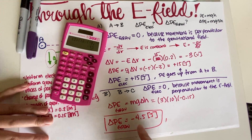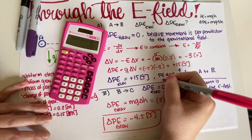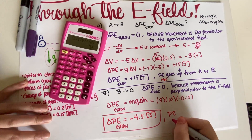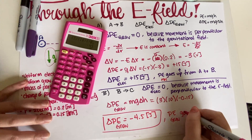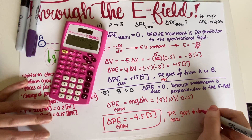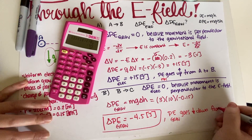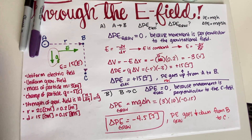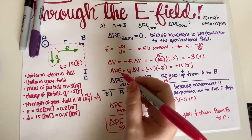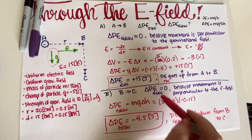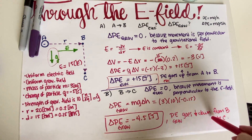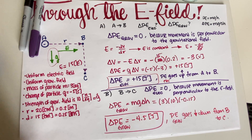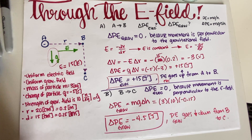So the final answer for B to C: ΔPE_gravitational = −4.5 joules (decreases), and ΔPE_electric = 0. Part C was asking us to calculate these numbers, which we've already done. That wraps up the problem. If you have any questions, leave them in the comments and I'll see you in the next video.